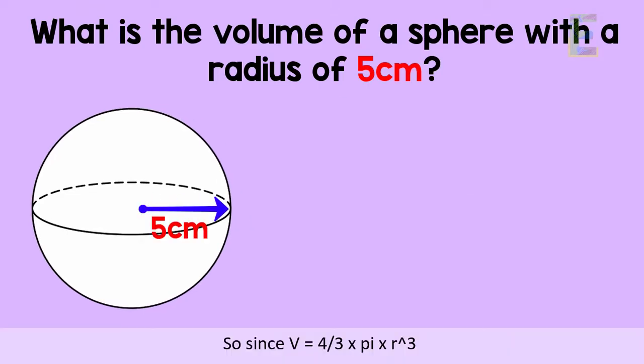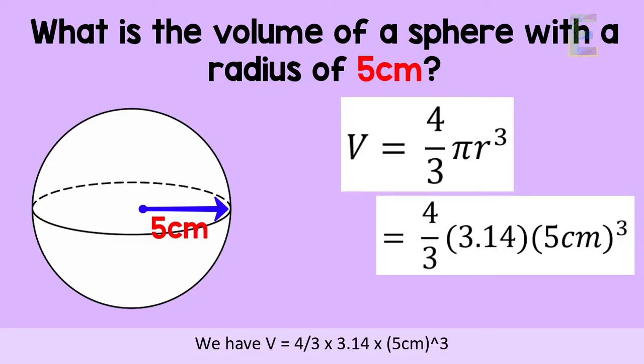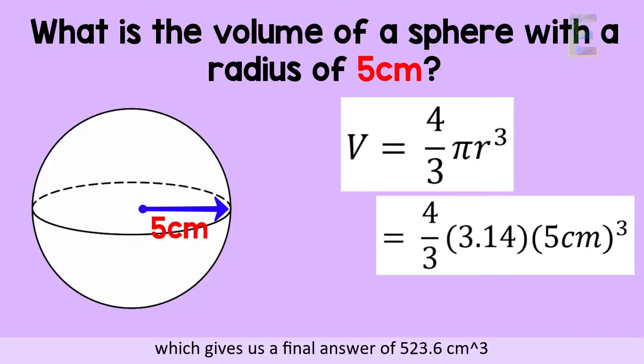So since V is equal to 4 thirds times pi times r cube, we have V is equal to 4 thirds times 3.14 times 5 cm cube, which gives us the final answer of 523.6 cm³.